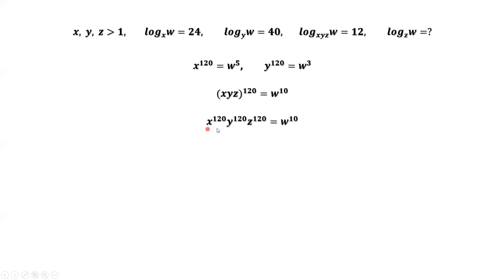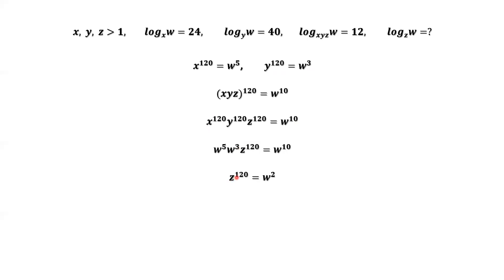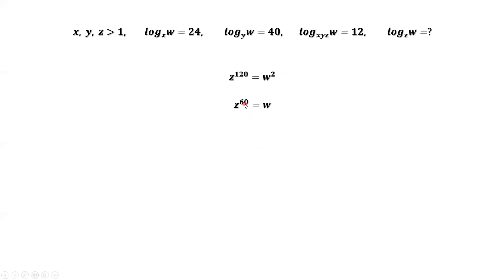We can replace x to the power 120 with w to the power 5, and y to the power 120 with w to the power 3, in the equation x times y times z to the power 120 equals w to the power 10. The left-hand side becomes w to the power 8 times z to the power 120. Dividing both sides by w to the power 8 gives z to the power 120 equals w squared. Taking the square root of both sides, we have z to the power 60 equals w.